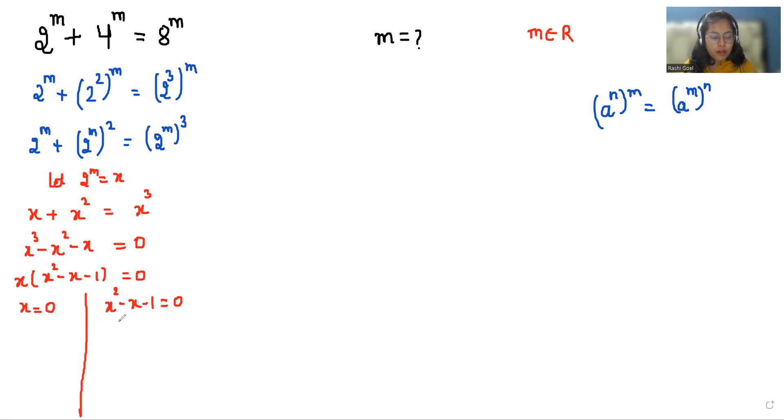So x² - x - 1 = 0. We can use the quadratic formula here, where A is the coefficient of x², that is 1. B is the coefficient of x, that is -1, and C is the constant, that is -1. So our formula is x = (-b ± √(b² - 4ac)) / 2a.